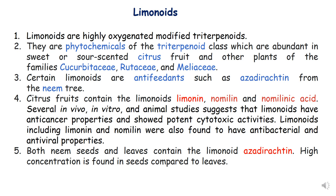Citrus fruits contain the limonoids limonin, nomilin and nomilinic acid. Several studies including in vivo and in vitro studies on animals have suggested that limonoids have anti-cancerous properties and they show cytotoxic activities. Limonoids including limonin and nomilin were also found to have antibacterial and antiviral properties. The neem seeds and leaves both contain the limonoid azadirachtin, but high concentration is found in seeds compared to leaves.